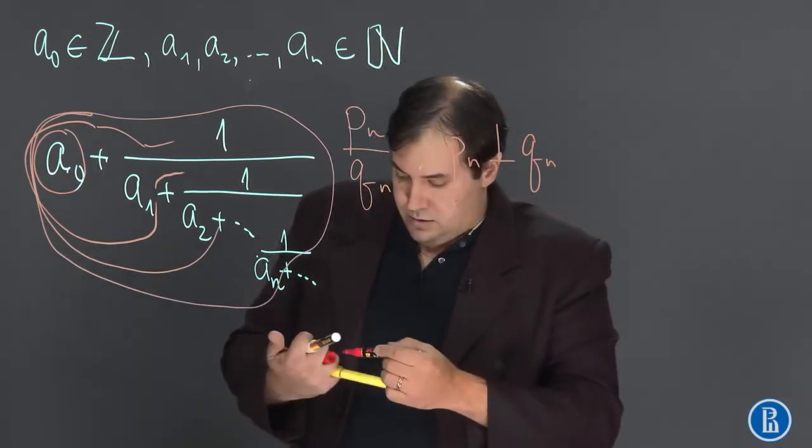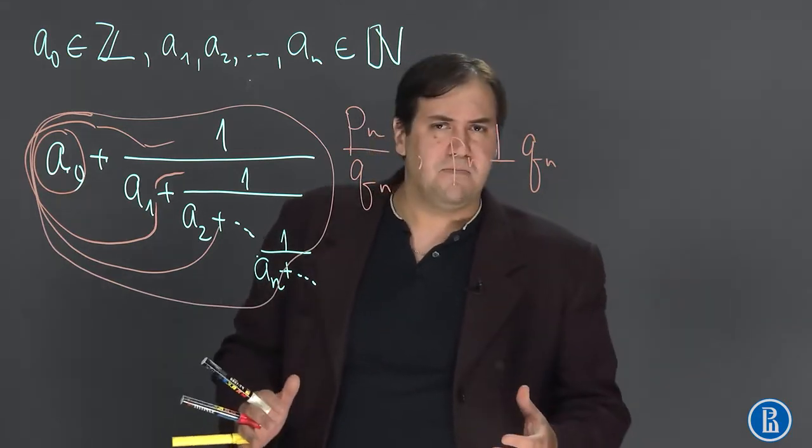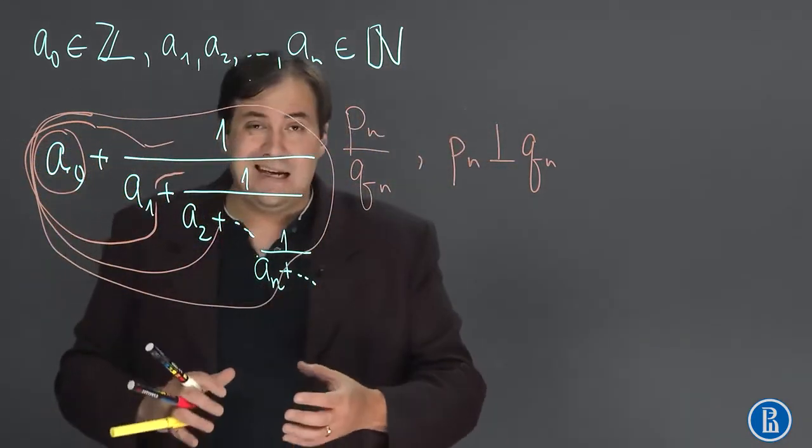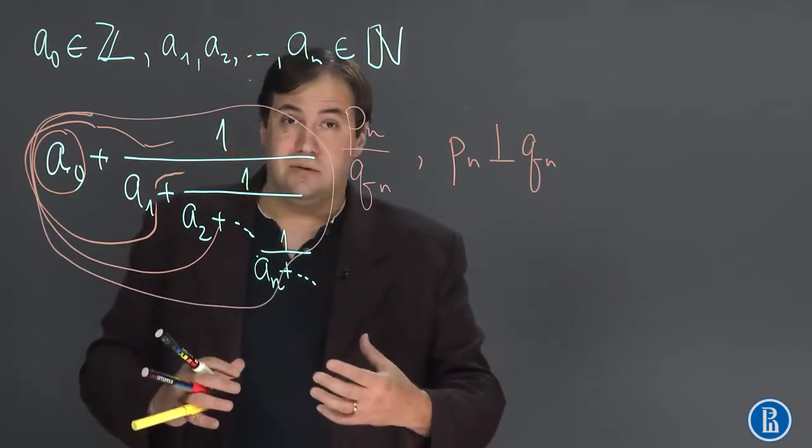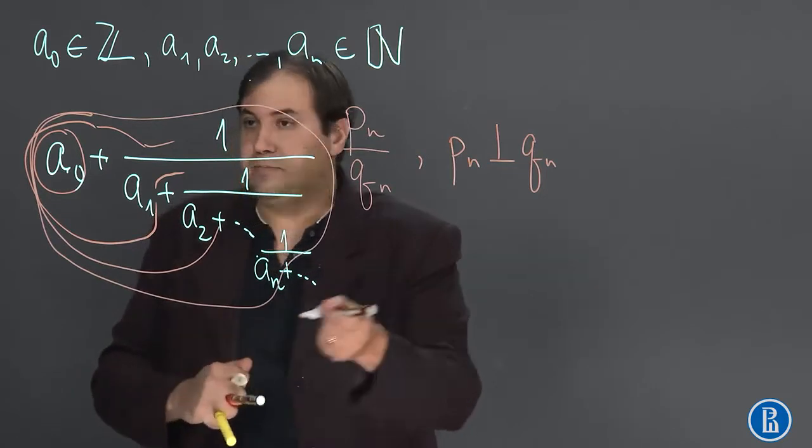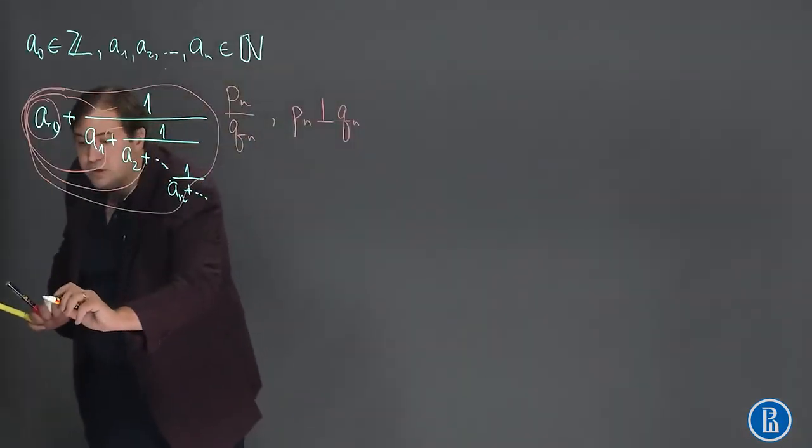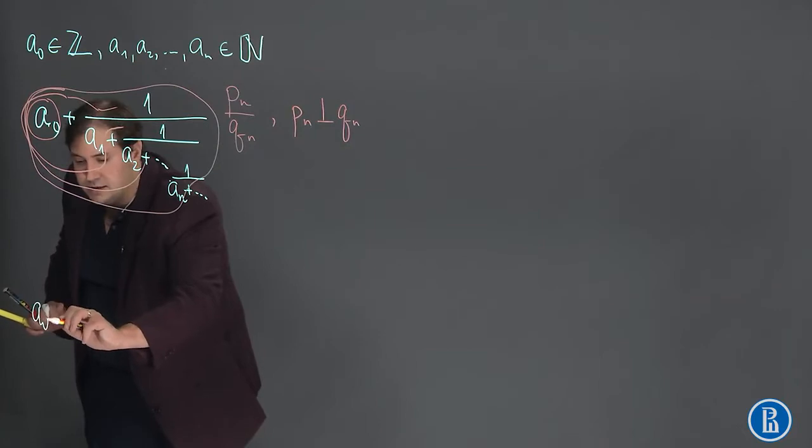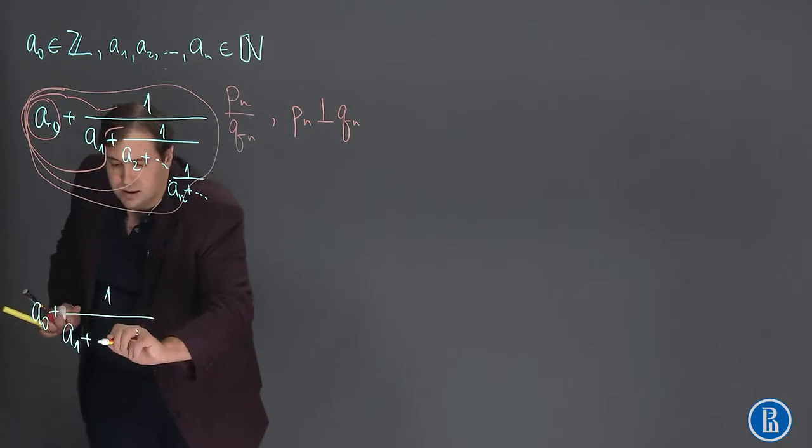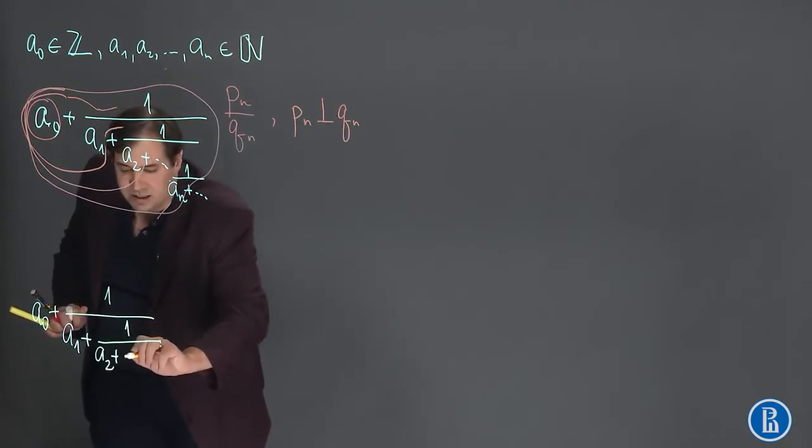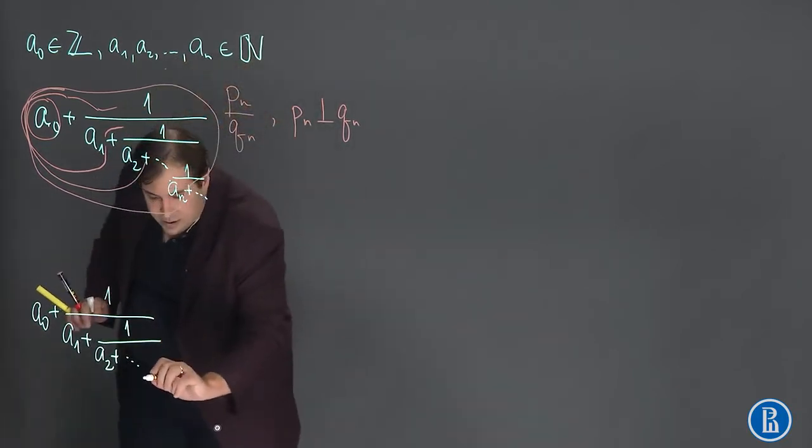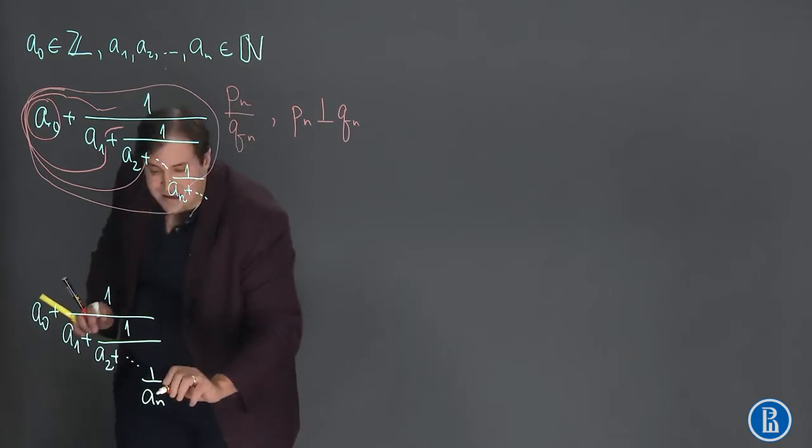Now we remember that finite Continued Fractions can be rolled up into a fraction of Continuants. Let's write this down. We understand that a0 plus 1 over a1 plus 1 over a2 and so on to a_n plus 1 over a_n in the end.